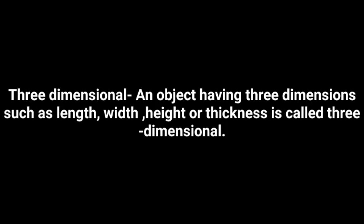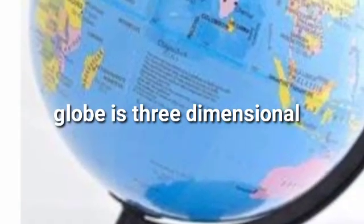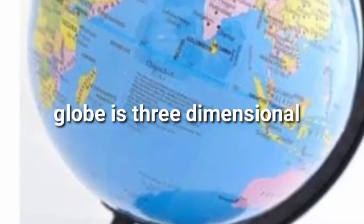Next is three-dimensional. What is the meaning of three-dimensional? An object having three dimensions — such as length, width, and height or thickness — is called three-dimensional.